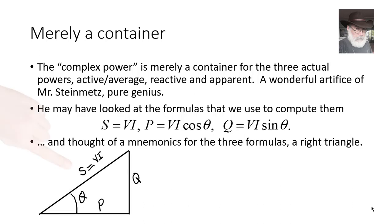In that right triangle, the hypotenuse is the apparent power. The horizontal side is the average power, and the vertical side is the reactive power. The angle between S and P is the power factor angle. But then he didn't leave it like that. He may have thought, I can think of a better way of representing and storing all of those values in a single container, a complex number. S with a hat, real part P, imaginary part Q, or if I write that in polar form, apparent power S, power factor angle theta. Wonderful.